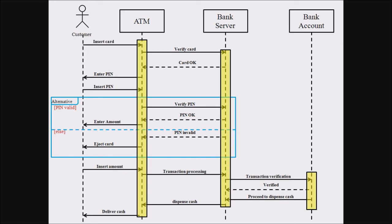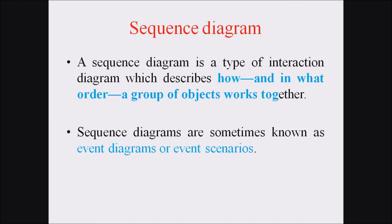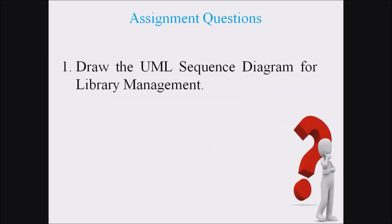This is how we represent the ATM transaction sequence diagram. A sequence diagram is a type of interaction diagram describing how and in what order a group of objects works together, also known as an event diagram or event scenarios. For your assignment, draw the UML sequence diagram for a library management system.